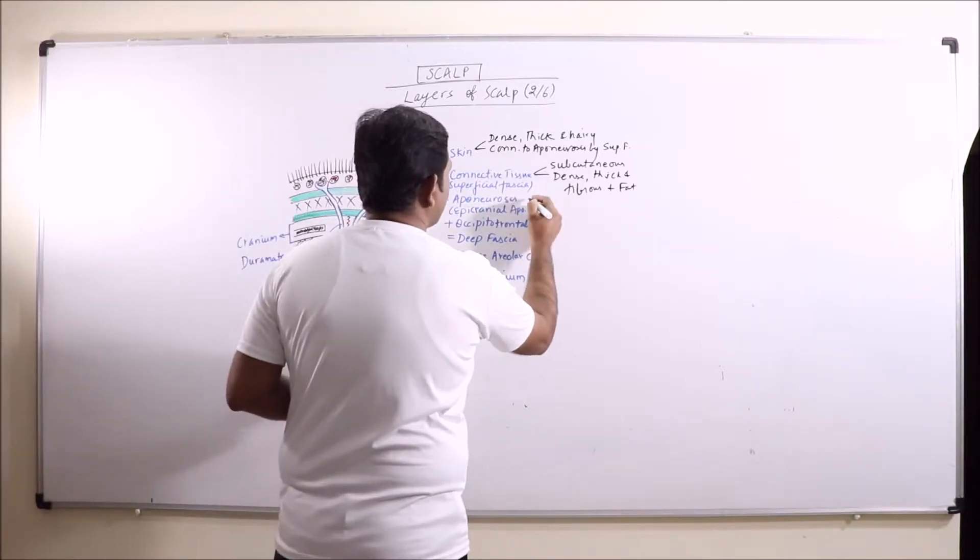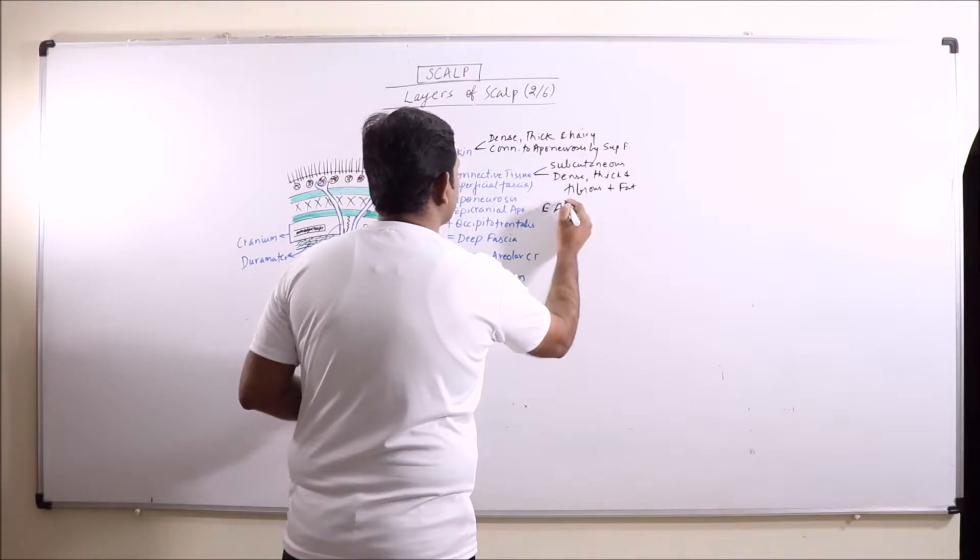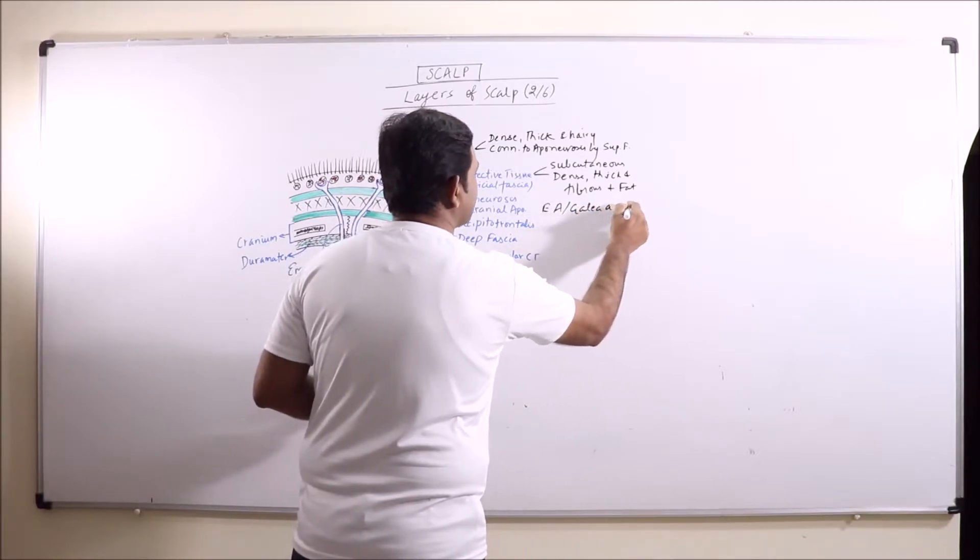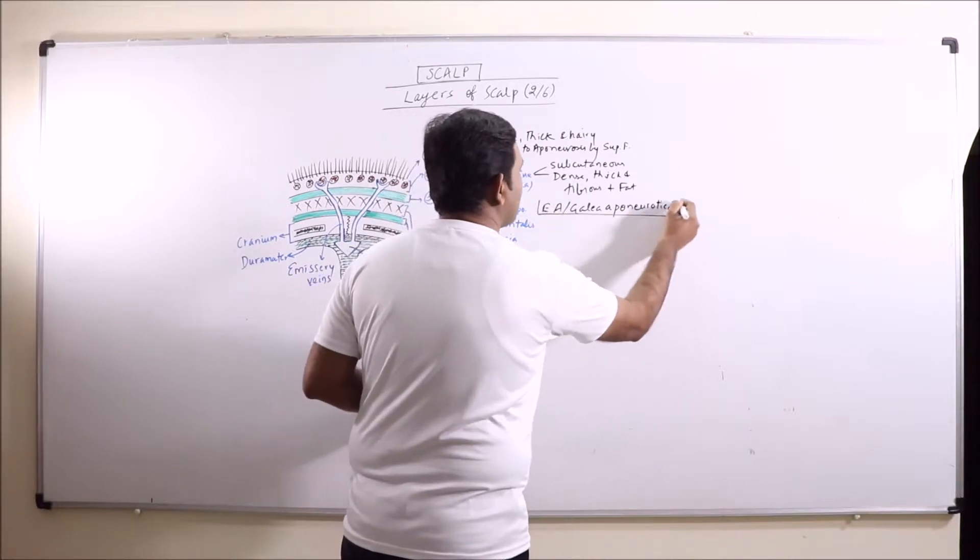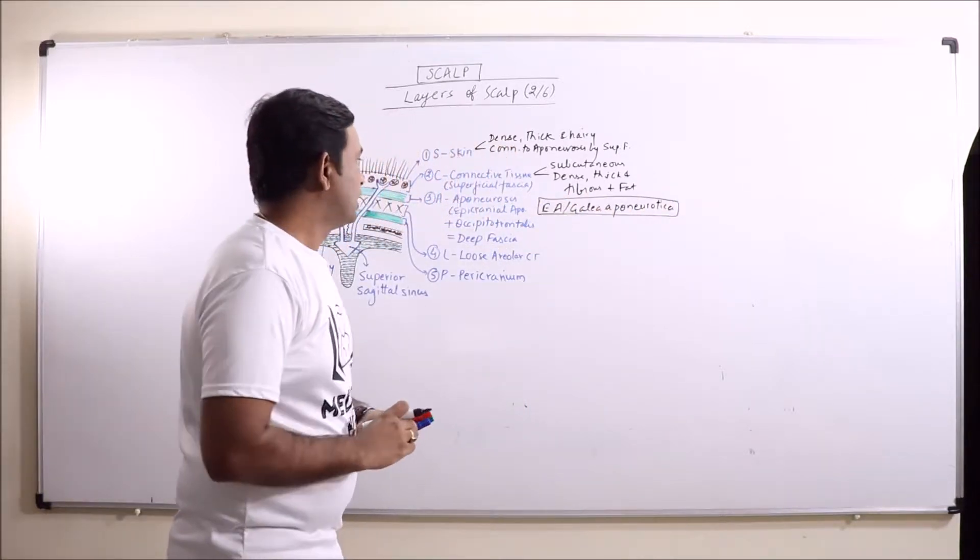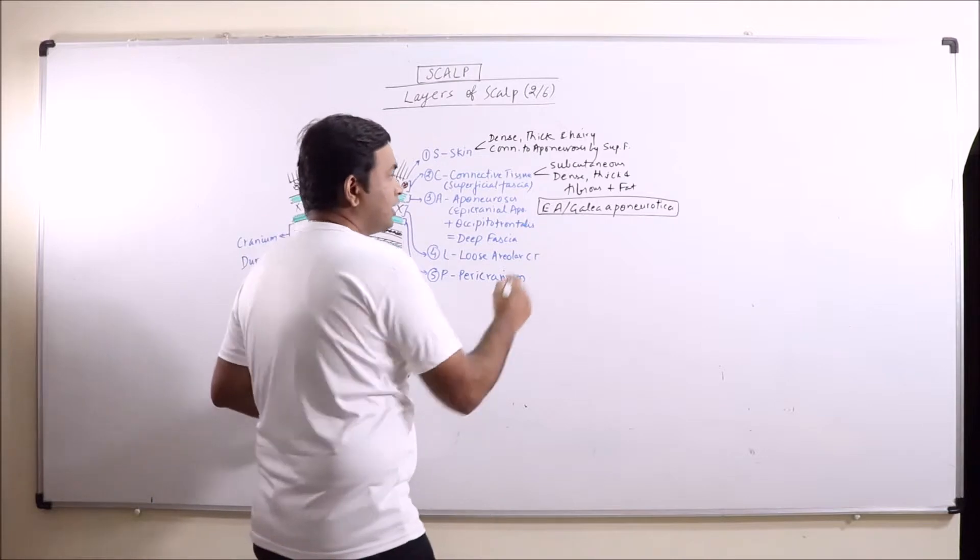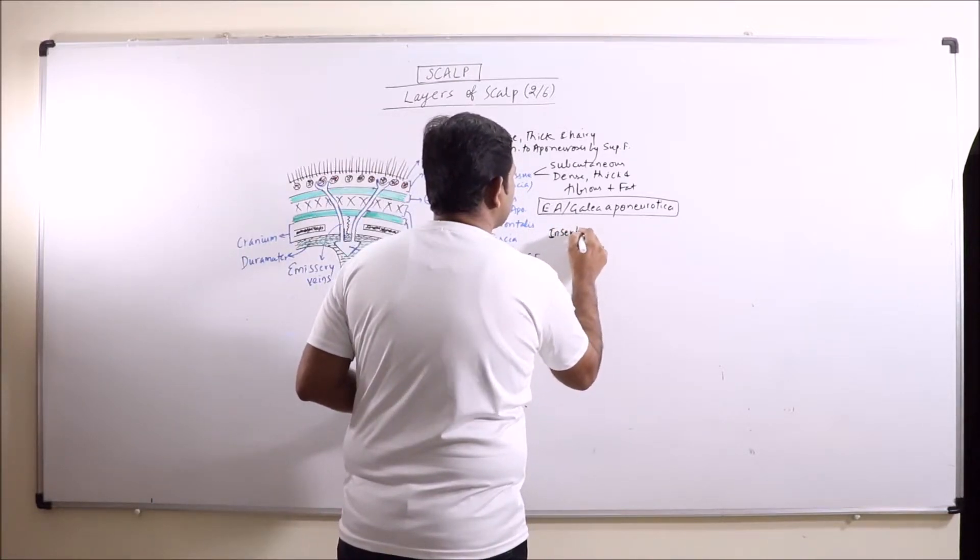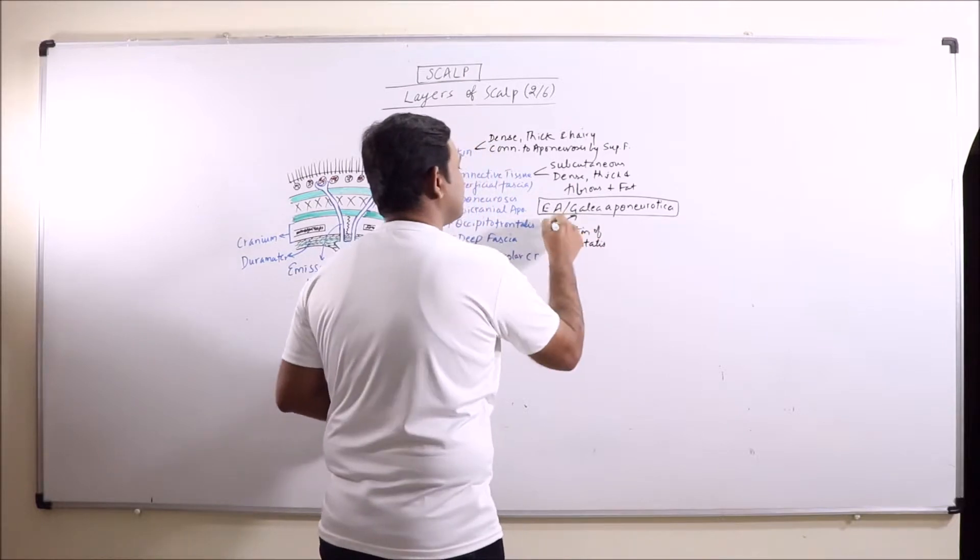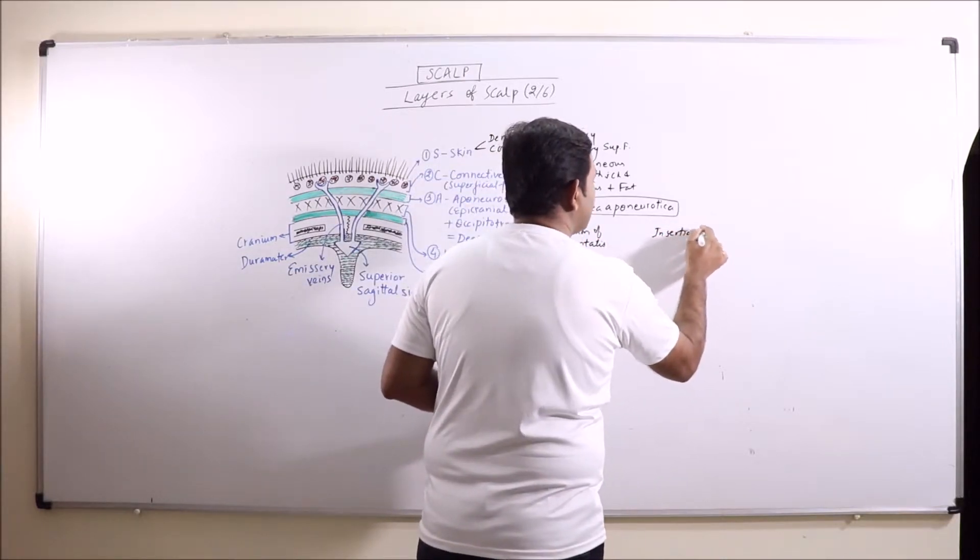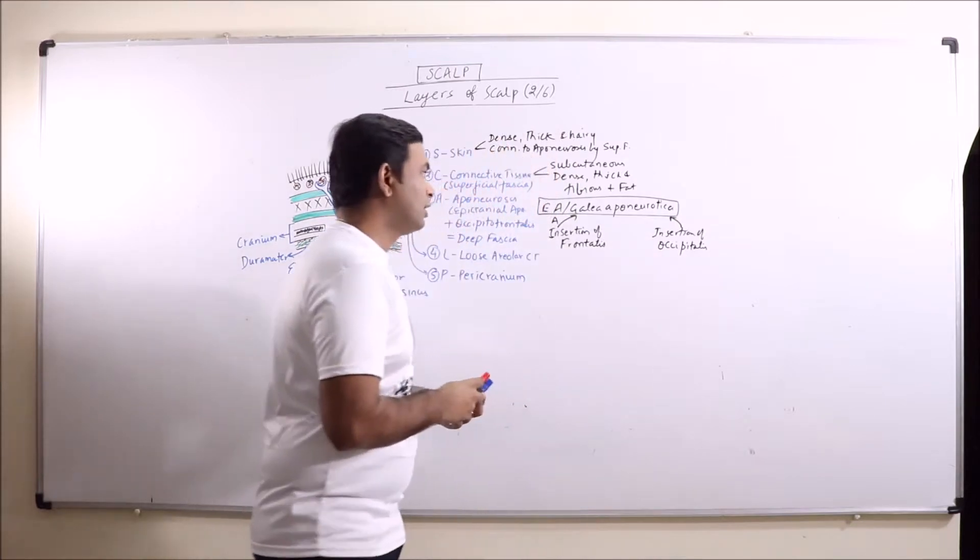Now aponeurosis. Aponeurosis is epicranial aponeurosis which is also known as galea aponeurotica. Now this epicranial aponeurosis or galea aponeurotica is basically located in this region, and it is thicker in the central portion.